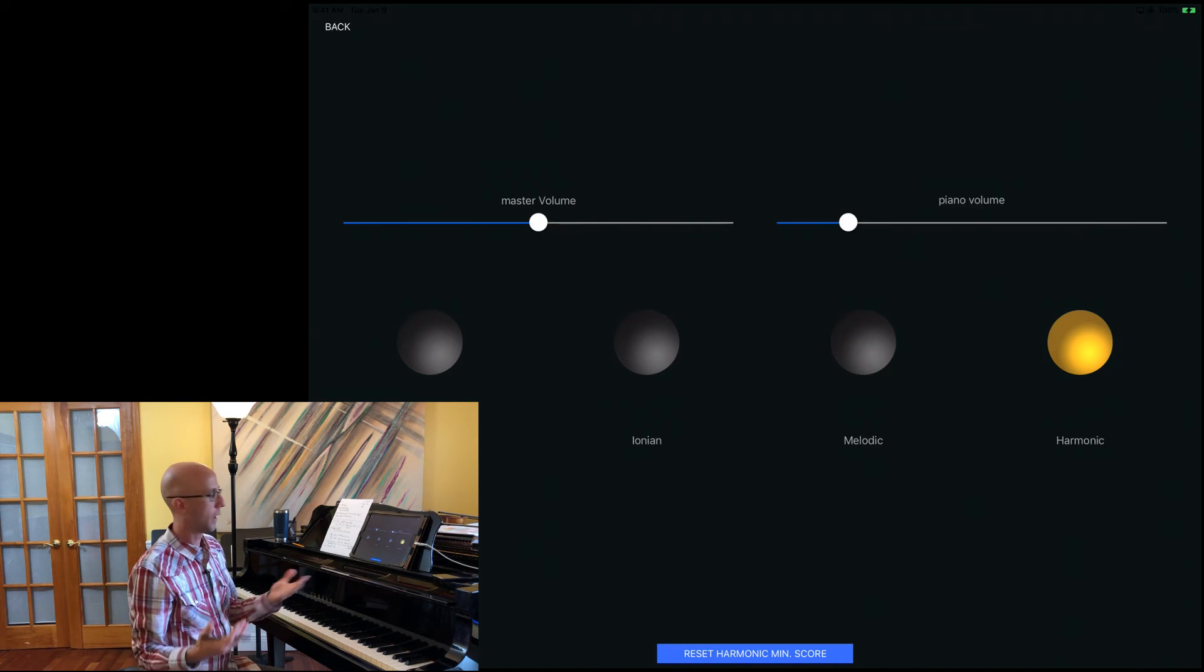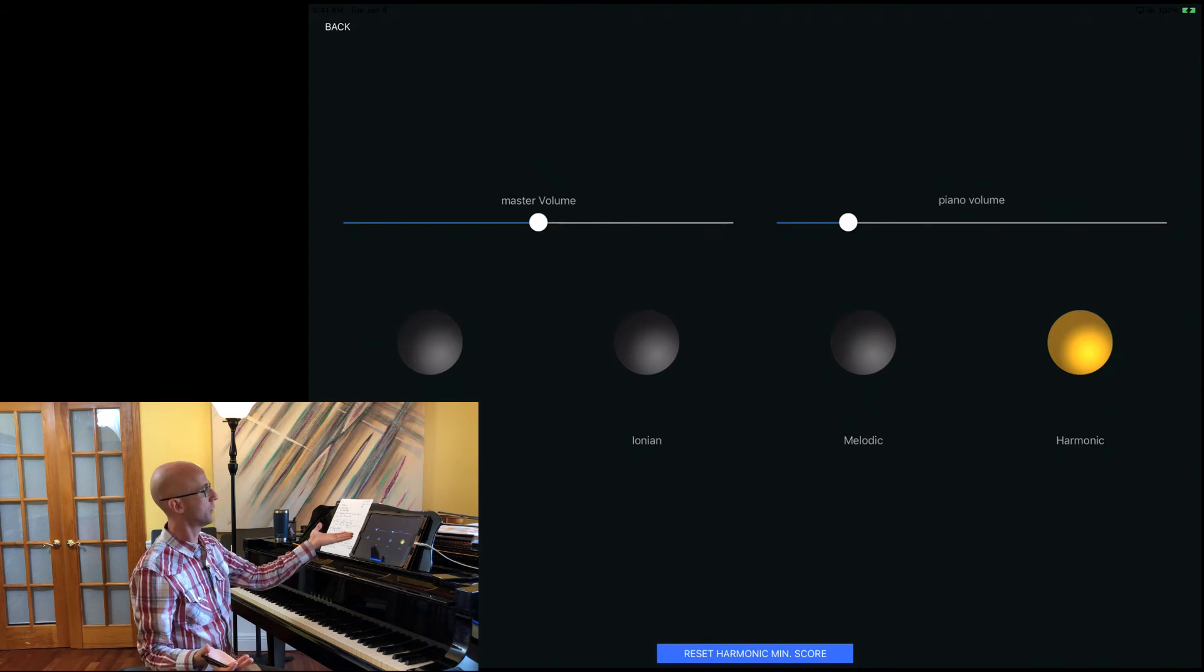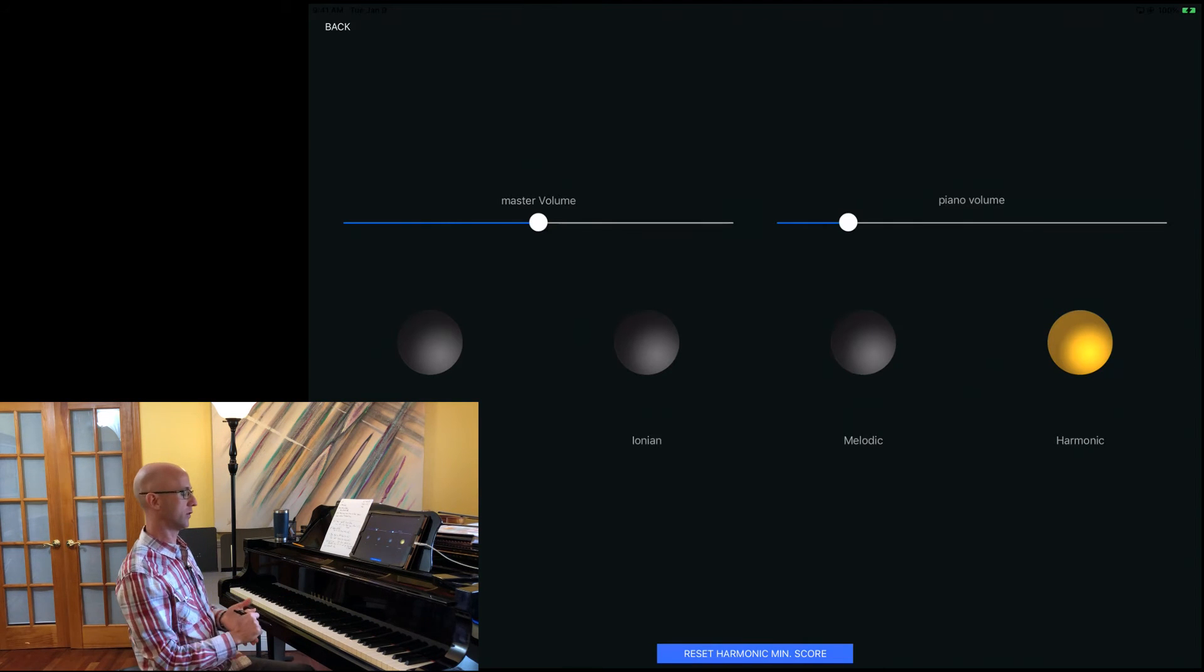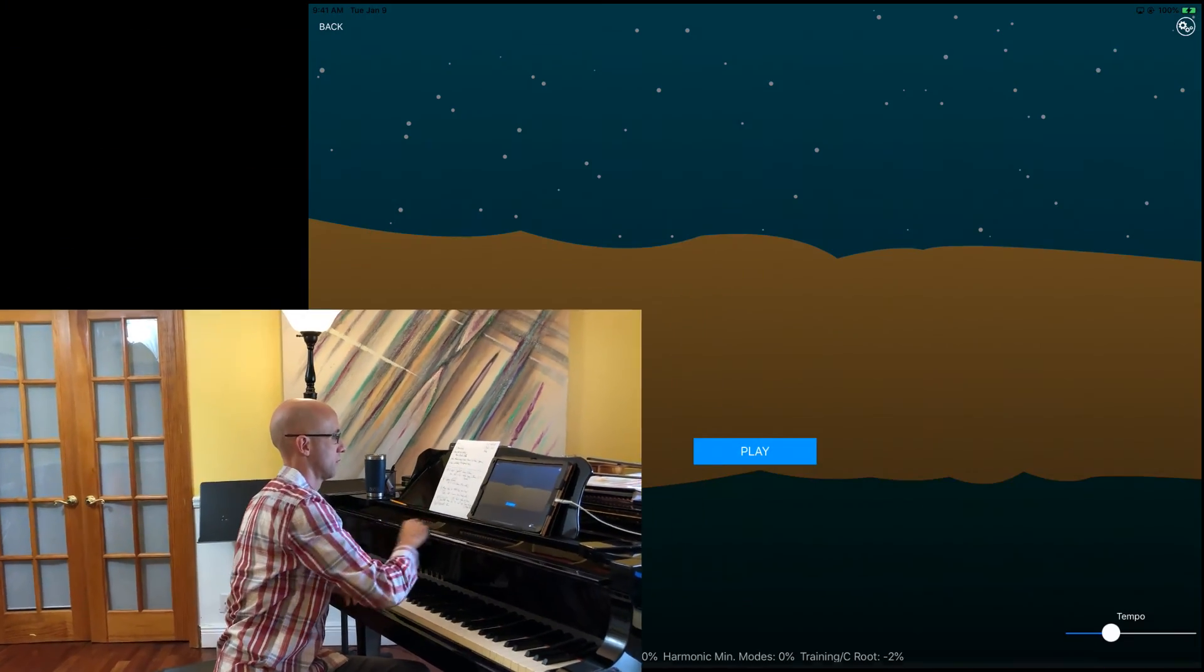If I leave the settings alone as they are now, it's going to work through all the modes of Ionian until I'm proficient with them, then it's going to jump over to melodic minor and go through all of those, and then graduate me over to harmonic minor. But if I want to concentrate on any one of those source scales in their modes, I can do that here. I can adjust the master volume and the piano volume here within this customization panel. Let's do some harmonic minor modes.